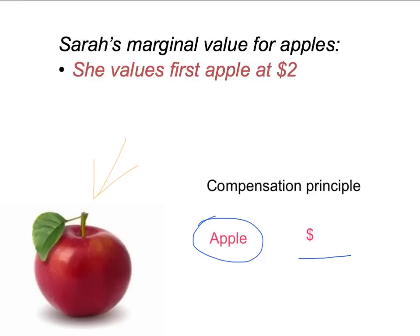Let's suppose that the answer to that question is $2. In other words, if we offered Sarah a choice — an apple or $2 — she would be indifferent. She wouldn't care. She'd be happy to have the apple, she'd be happy to have the $2, and she wouldn't mind which she chose. The apple is worth exactly $2 to Sarah, so we can say that Sarah values that first apple at $2.